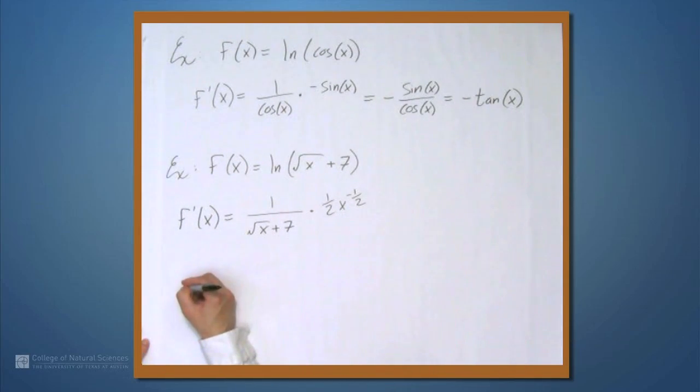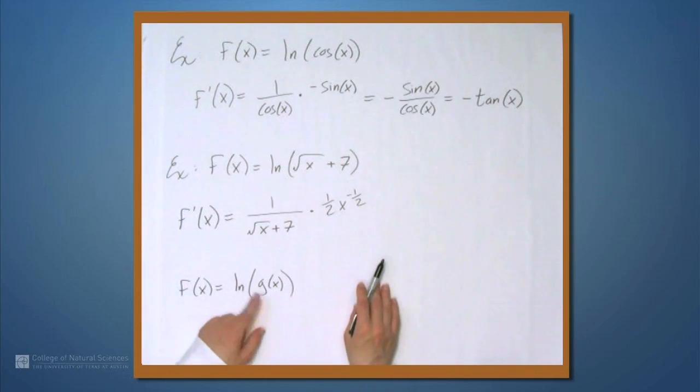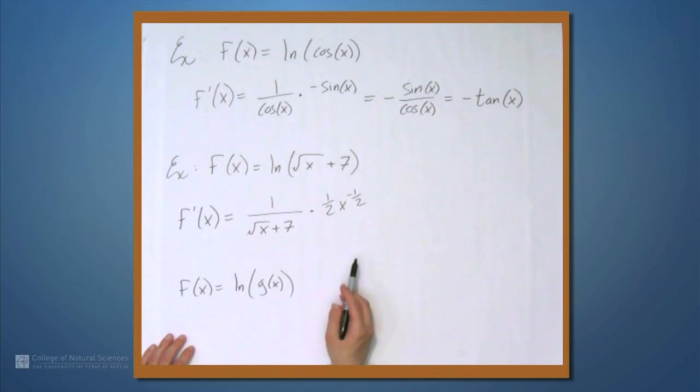So all of these were of the form f equals natural log of, let's say, g of x. Here, g is square root of x plus 7. Here, it's cosine. In the first example, it was x squared plus 3.